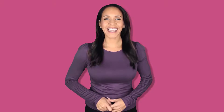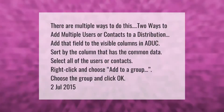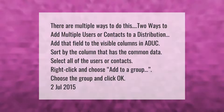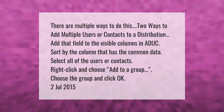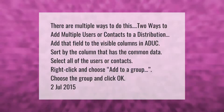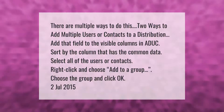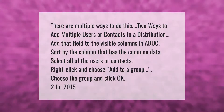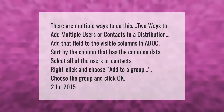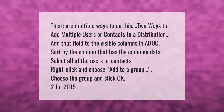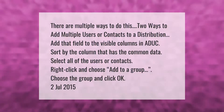There are multiple ways to add multiple users or contacts to a distribution group. Add that field to the visible columns in ADUC, then sort by the column that has the common data. Select all of the users or contacts, right-click and choose 'Add to a Group,' then choose the group and click OK.